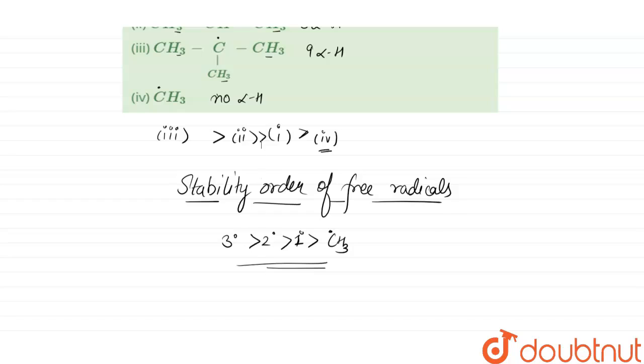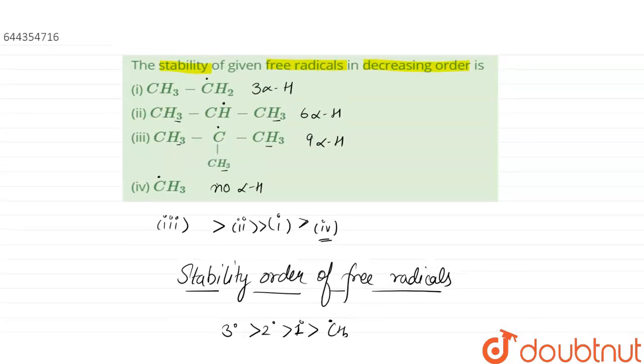You can see that option number one is a one degree free radical. This was a two degree free radical, and it was a three degree free radical. And the fourth one was the methyl radical. So from here the order will be the same: three, two, one, and four.